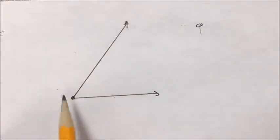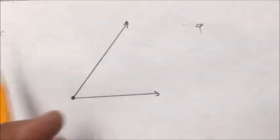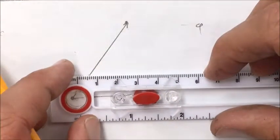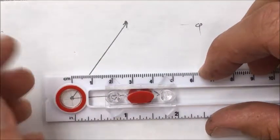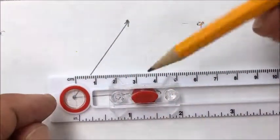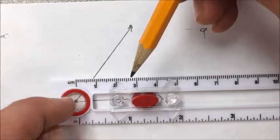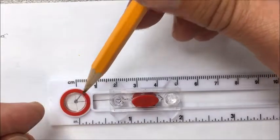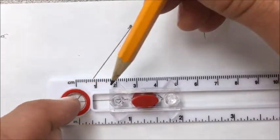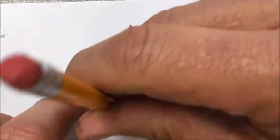What I want to do is bisect this angle. So what I'm going to do is take my compass and set it at a certain distance—it doesn't really matter how far, I don't want to go too far. Line up this part right here with that vertex, and I'm going to make